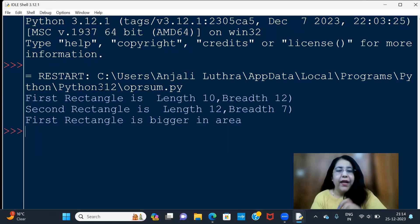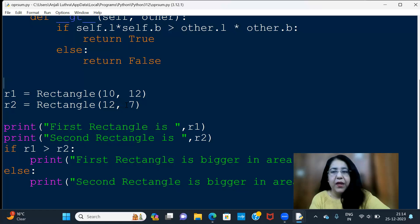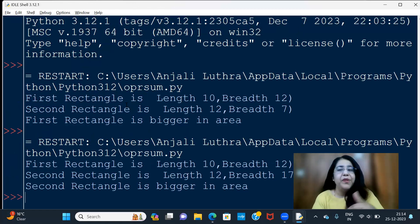Right now what I will do here is the first rectangle which is bigger in the area. But we can change the values. I have 12 and 7, save and run, so the second area is bigger, so it is showing me that the second rectangle is bigger in area.